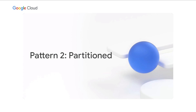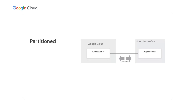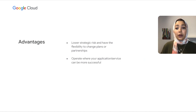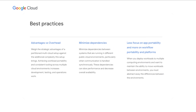The second pattern is the partition pattern, which combines multiple public cloud environments and gives you the flexibility to deploy an application in the best computing environment for it — so application A is on cloud one and application B is on cloud two, based on its dependencies and cloud services it uses. Because of your presence in multiple public cloud environments, you're lowering your risk and have flexibility to change plans or partnerships. Each additional environment comes with additional overhead, so weigh the advantages. Also minimize dependencies across clouds, and focus more on the portability of your workflows and having a unified platform across providers.